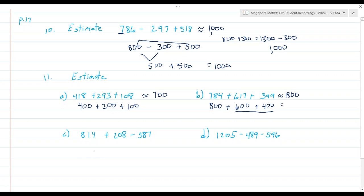Letter C. Always be careful to read the problem correctly. 814 rounds to 800. 208 rounds to 200. I'm going to subtract. That's what you have to notice in C. There's a subtraction. 587 rounds to 600. 800 and 200 is 1000. 1000 minus 600 is 400. So the best estimation of this answer is 400.